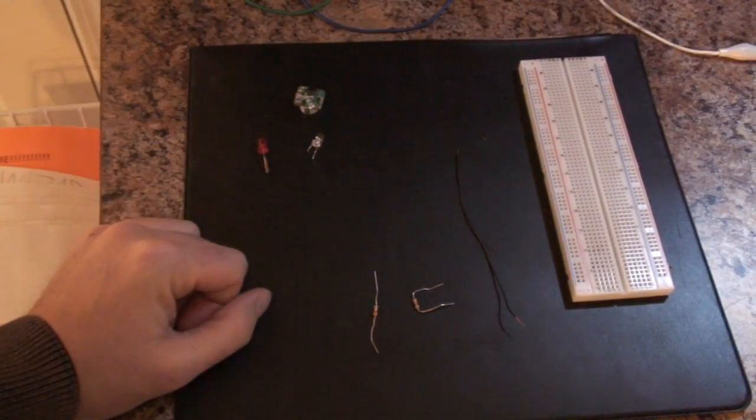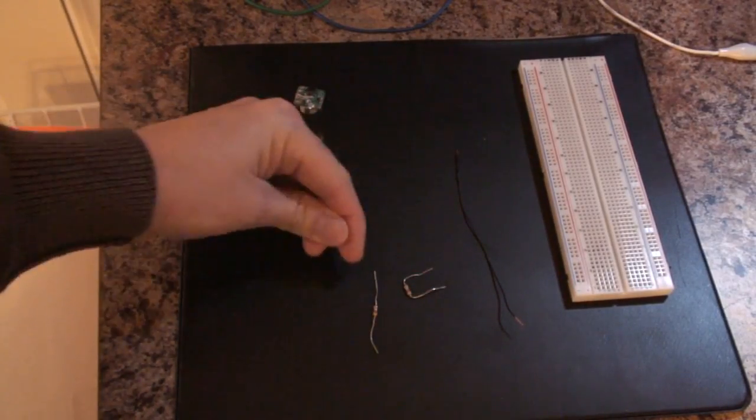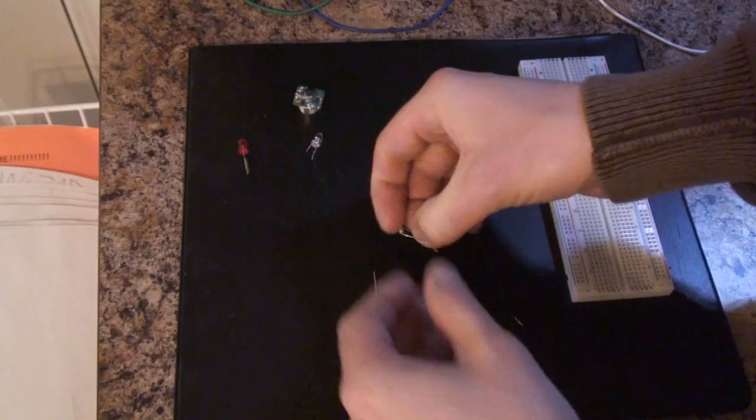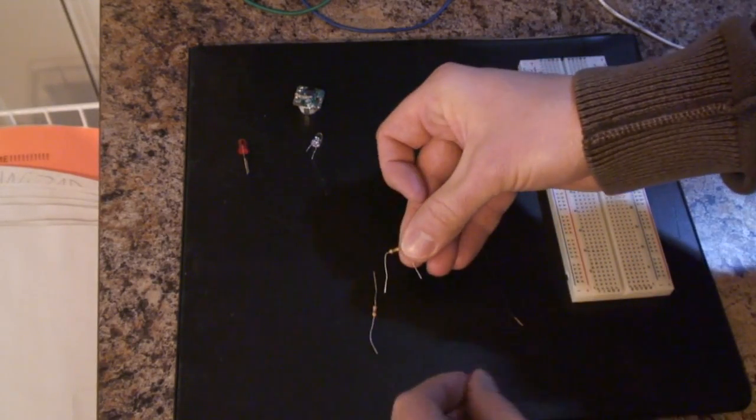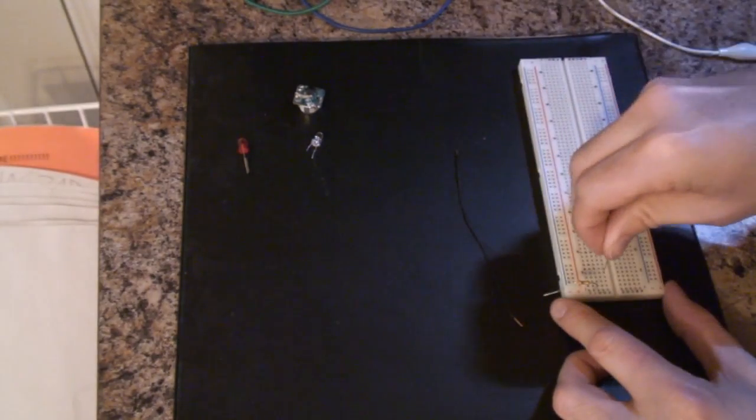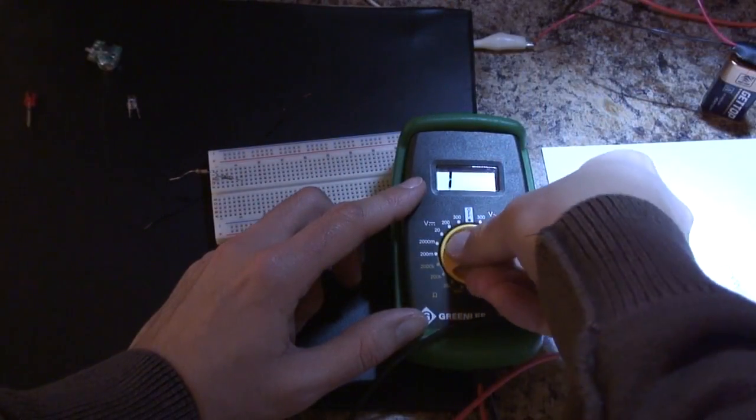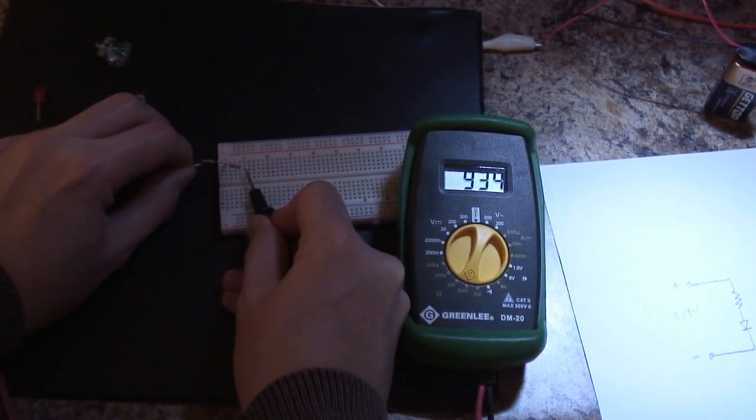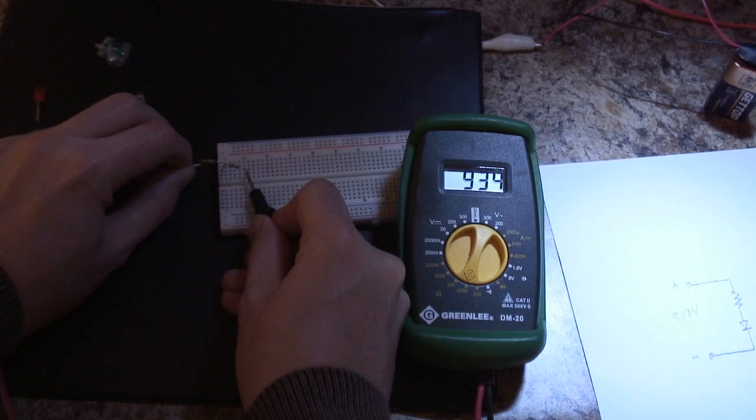Since I do not have a 1 kilo ohm resistor on hand, I'm going to use two resistors in series that will be close to it. Each of these resistors is about 470 ohms. Using another multimeter, I'll measure the resistance. With these two resistors in series, we get 934 ohms.